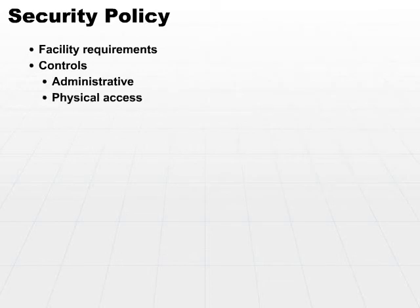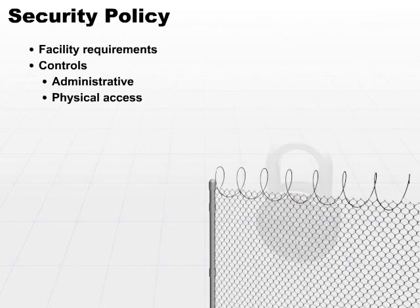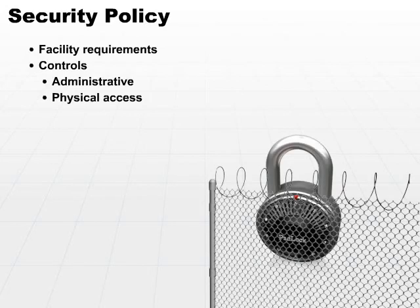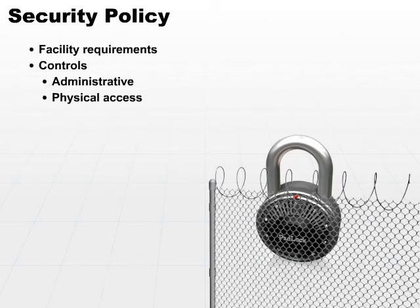Then we have physical access controls. Those are the physical implements — the hardware, the things that sit out there that stand between an attacker, perhaps, and your information system. For one example, it might be a fence or a locked door. That would be a physical access control.